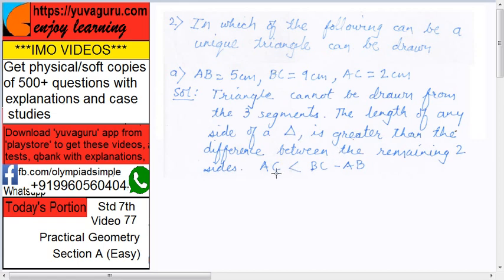Over here what is the case? AC means 2 centimeter is less than difference between the two sides, that is 9 minus 4. So triangle cannot be drawn. It should have been AC greater than BC minus AB, then the triangle could have been drawn.